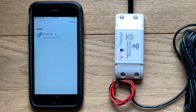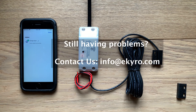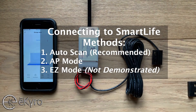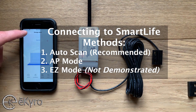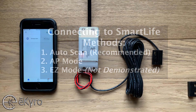This is the second connection method. There is a third method — the easy connect method — however we're not going to detail that one in this video for the sake of length. If you are not having success with these two connection methods, you can always email us at info@eCaro.com and we'll send you that third method as well as some potential connection problem solutions. In this video, we detailed two of the three connection methods: the first was the auto scan method, which automatically scans for the garage door opener via Bluetooth; the second was the AP mode method. If those don't work, feel free to reach out to us by email at info@eCaro.com.